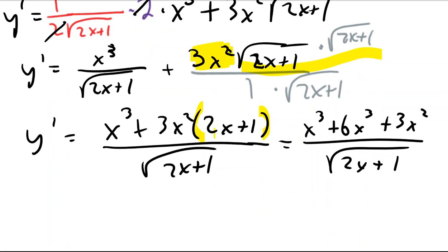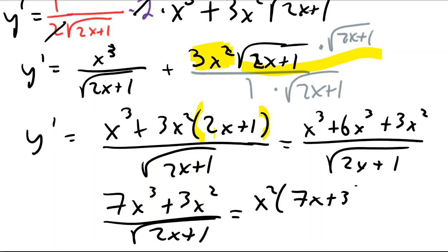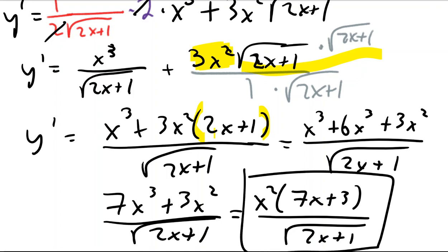It looks like in the numerator I could combine my x cubes. And I don't know, that's about the extent of what I would do at least quickly. So I would start to look at the solutions. It looks like the only other thing they may have done is factored out an x². They did GCF before they wrote the answer out.